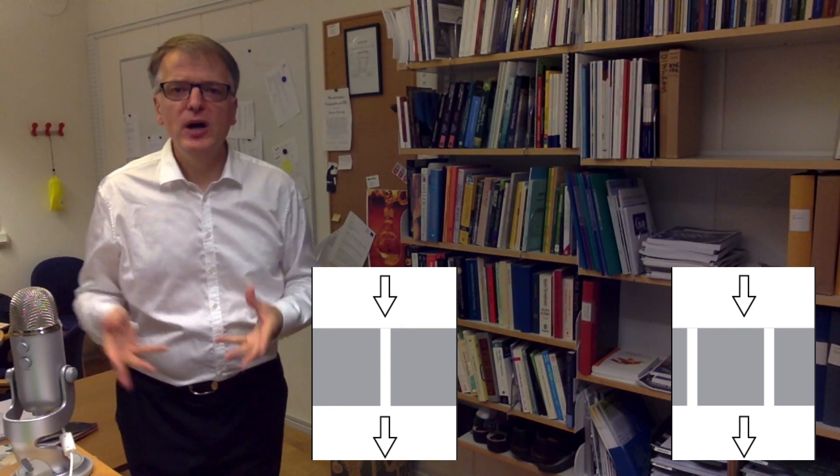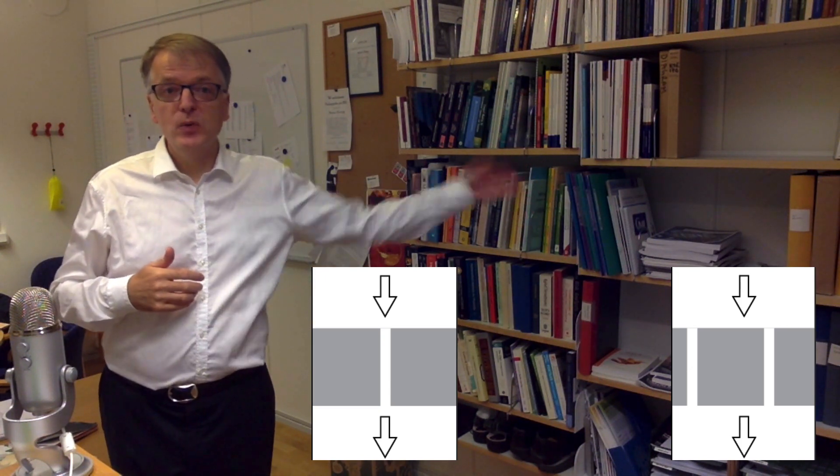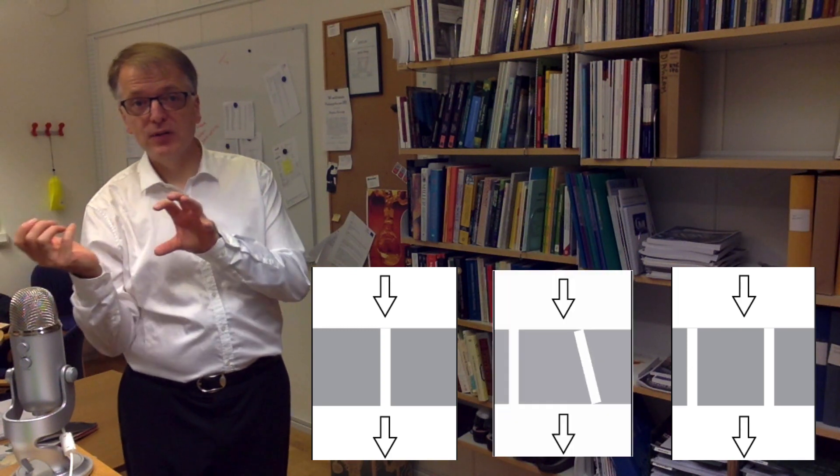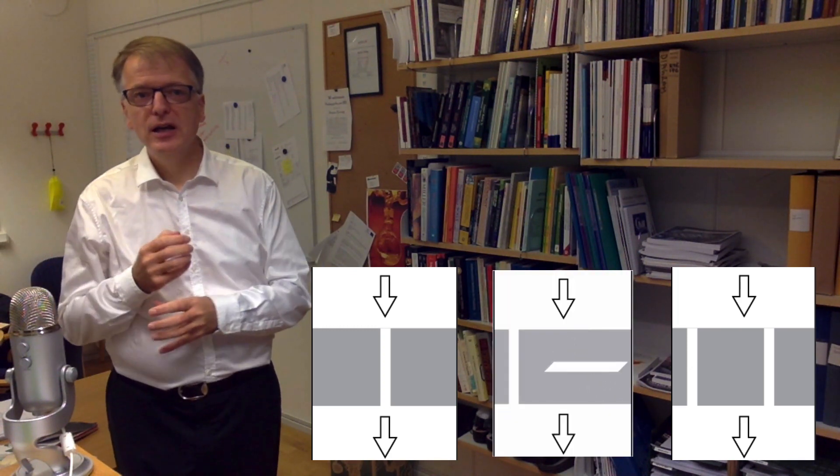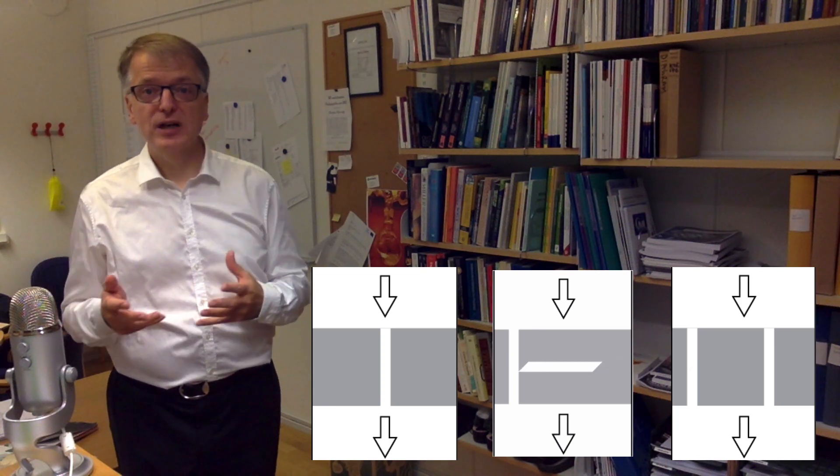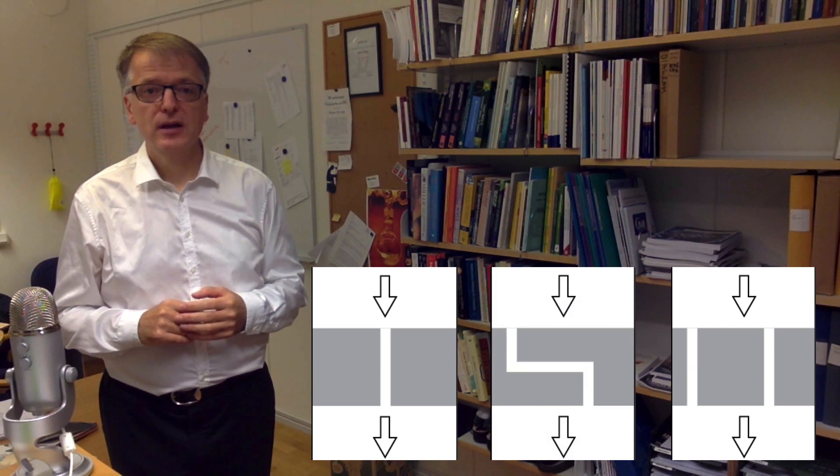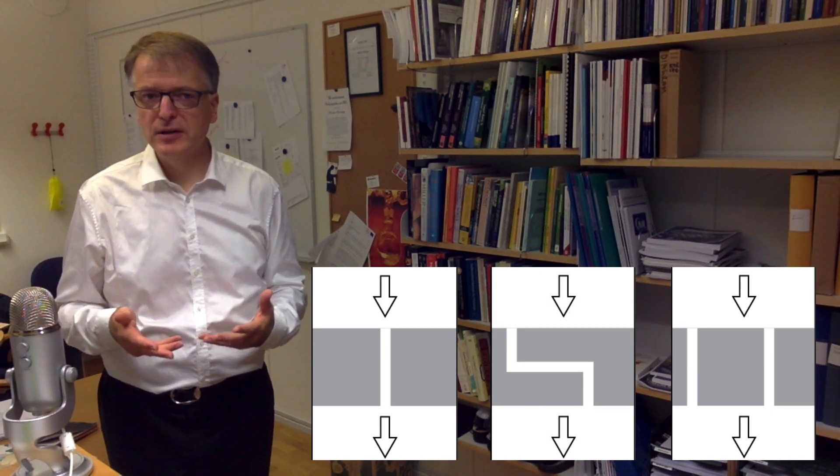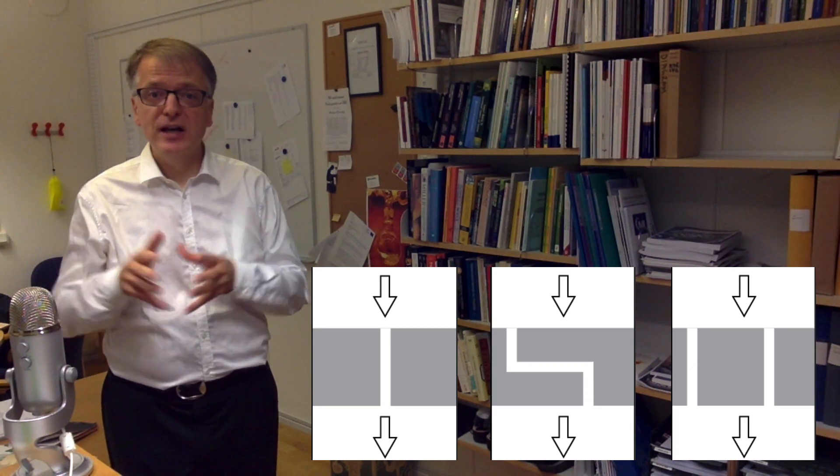But let us play around with these two examples and create a third example. If you take the porous media with two channels and then rotate one of the channels and make it horizontal and move the bottom half of the other channel, we can create a twice as long channel that goes through the material in a zigzag fashion.